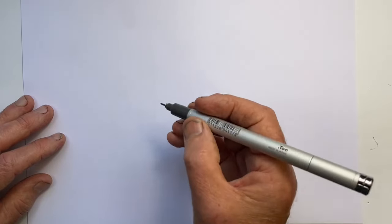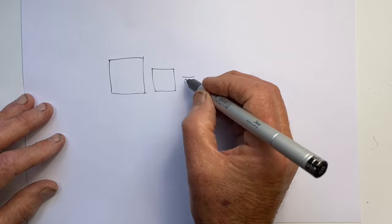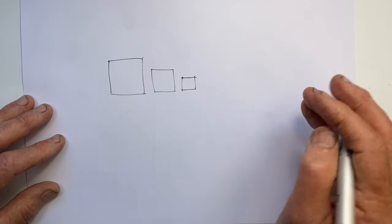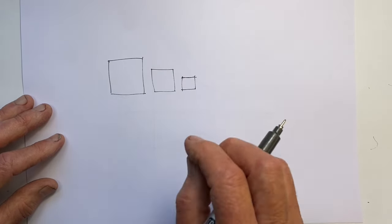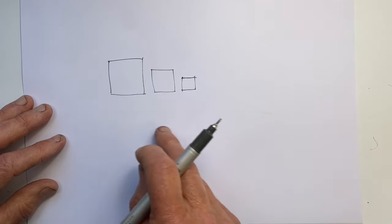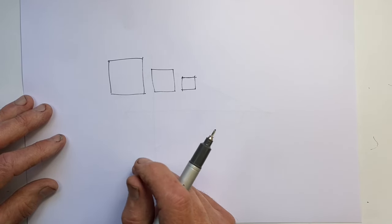The second perspective point is that as objects get further away, they get smaller. That's pretty obvious with objects the same size and shape.